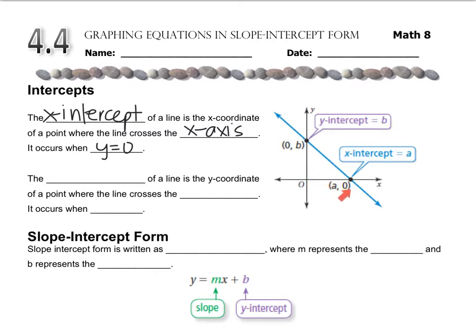On the flip side, the y-intercept of a line is the y-coordinate of a point where the line crosses the y-axis, and it occurs when x equals zero. If you look at the picture, the x-value is zero when you're on the y-axis, and that occurs all the time on the y-axis.